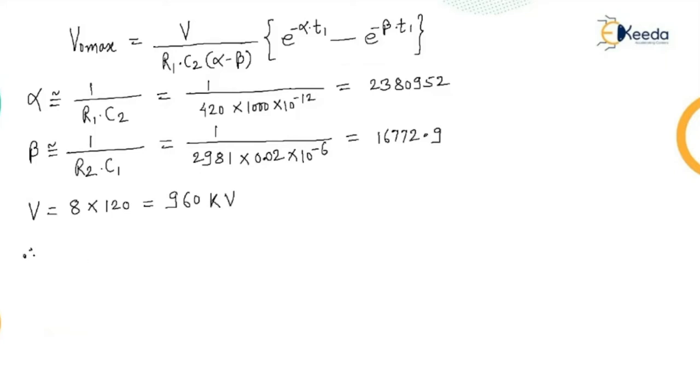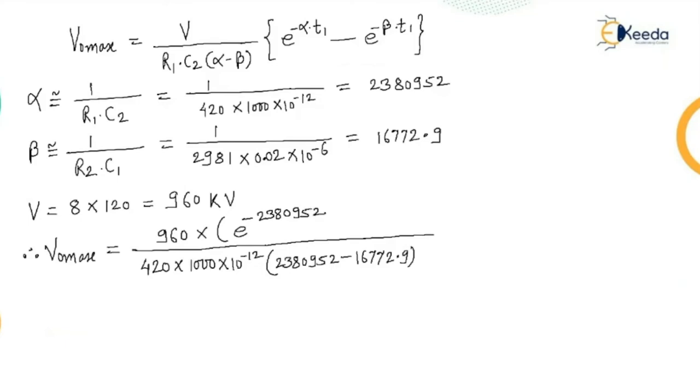So therefore output maximum voltage by putting all the quantities here, keeping 960 kilovolt multiplied by e to the power minus alpha time period, e to the power minus beta time period. And this value comes out to be 892 kilovolt.